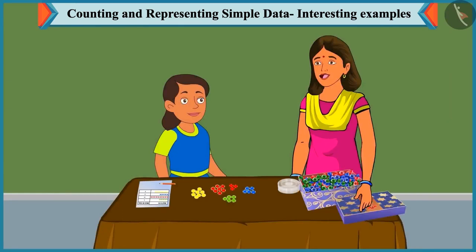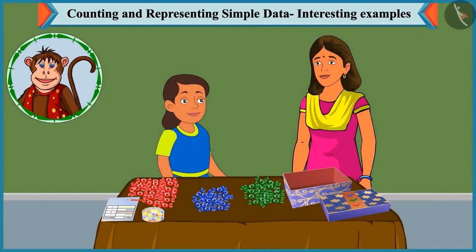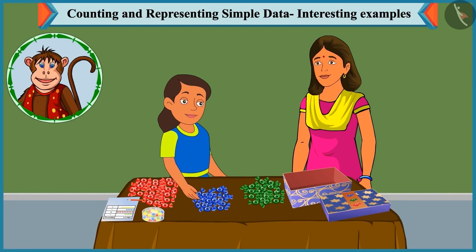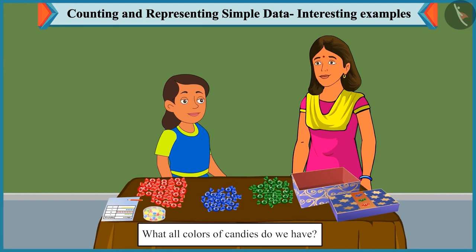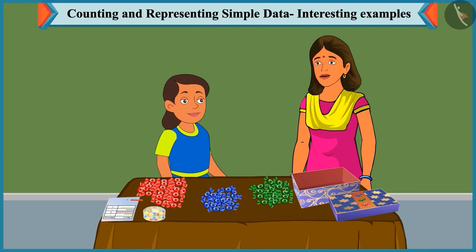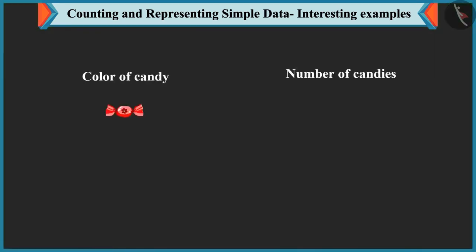Mummy asks Bubbly to count her favorite candies by color. Bubbly groups all candies by color. She reports red, blue, and green colored candies. The counts are 25 red, 19 blue, and 21 green color candies.